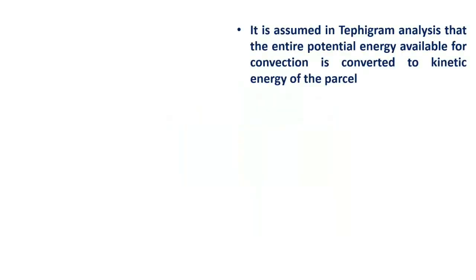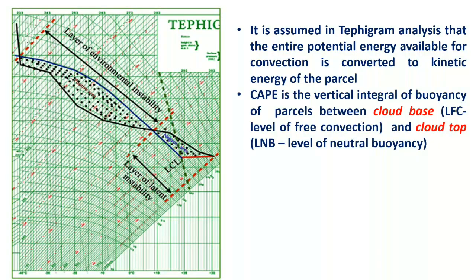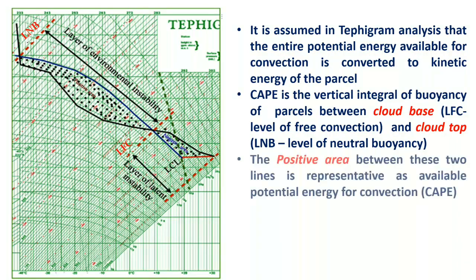It is assumed in T-phigram analysis that the entire potential energy available for convection is converted to kinetic energy of the parcel. CAPE is the vertical integral of buoyancy of parcels between cloud base at the LFC (level of free convection) and cloud top at the LNB (level of neutral buoyancy). The parcel is lifted from LFC to LNB, also known as the equilibrium level, and the positive area between these two lines is representative of the available potential energy for convection.